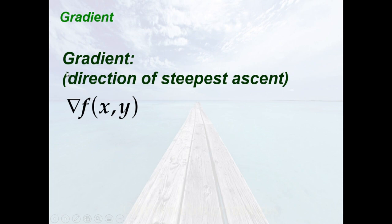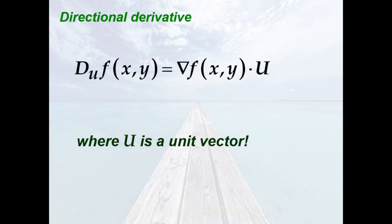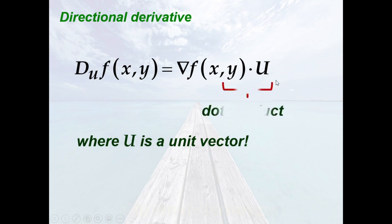Now I'm going to introduce the gradient. It is just the direction of the steepest ascent, and it is denoted by del f. The gradient is a vector composed of the partial derivatives. We have seen this in the formula of the directional derivative. Hence, the formula for finding the directional derivative is just the dot product of the gradient and the unit vector.